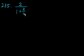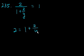Problem 235. If 2 over 1 plus 2 over y is equal to 1, then what does y equal? Let's take the inverse of both. Let's multiply both sides of the equation times 1 plus 2 over y. And so we get 2 is equal to 1 plus 2 over y.